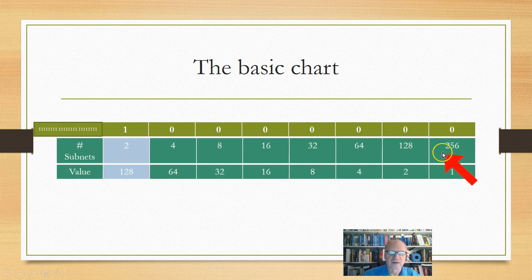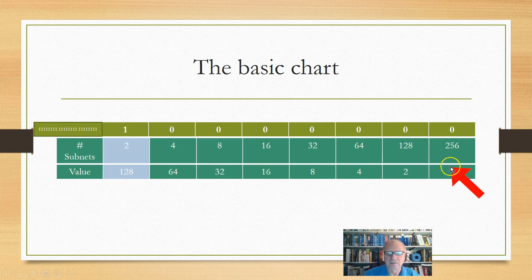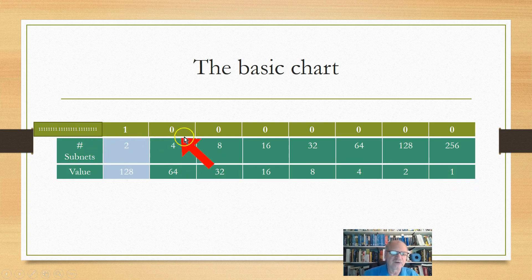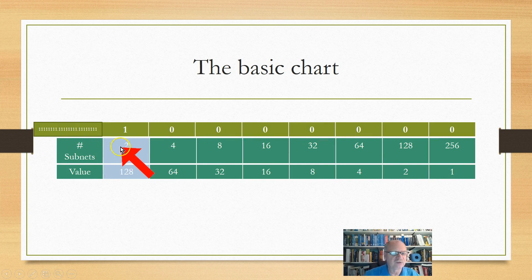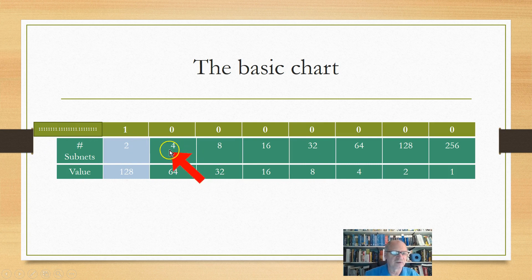I can't actually use all of these, as we'll see later on, or as you saw in the last video, because I don't have enough hosts left. But at any rate, this is the sequence of how many subnets you can get by borrowing X number of bits. If I borrow one bit I can get two; if I borrow two bits I can get four; three bits, I can get eight, and so on.